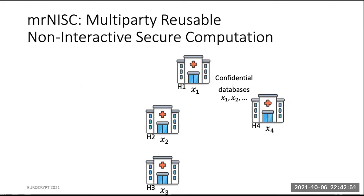The motivating scenario for the talk is the following setting. Imagine four parties — one, two, three and four — that each of them has a private input or private database, x1, x2, x3 and x4, and they want to be able to perform joint computations on their inputs and they want to make sure that the computations are private.